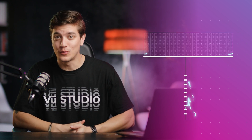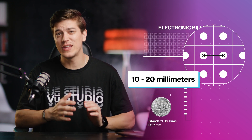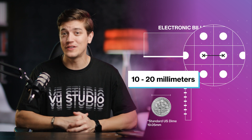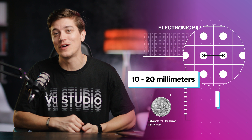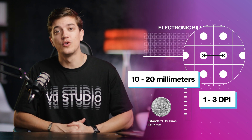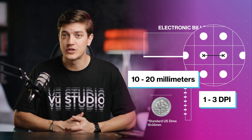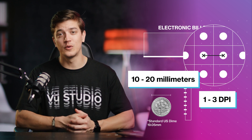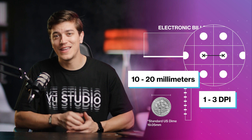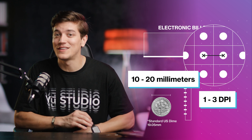Oh, and it gets better. Electronic billboards usually have a pixel pitch of around 10 to 20 millimeters, which equates to around a DPI of 1 to 3. Now does that mean that the resolution of a billboard is a lot lower than the resolution of printed media and stuff that you consume on the internet? And the answer is no — not necessarily.